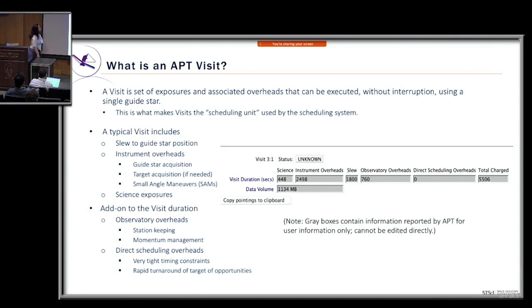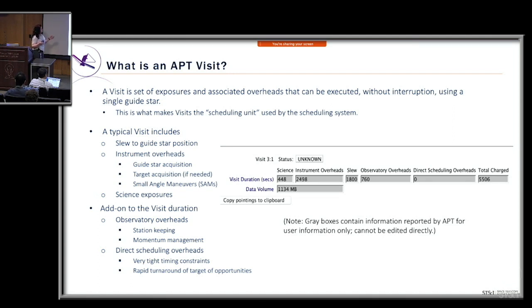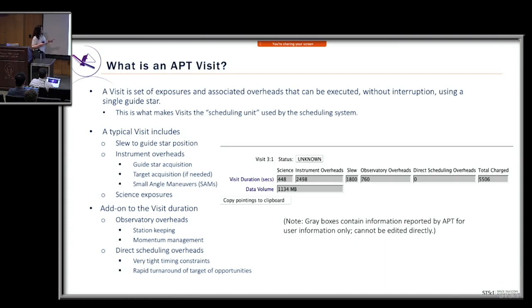What is an APT visit? A visit is a set of exposures that includes overheads, and they can be scheduled without interruption using a single guide star. This is what makes visits the scheduling unit used by our scheduling system. A typical visit can include the slew to the guide star, instrument overheads such as guide star acquisitions, a target acquisition if the template allows it, small angle maneuvers (SAMs), and science exposures.